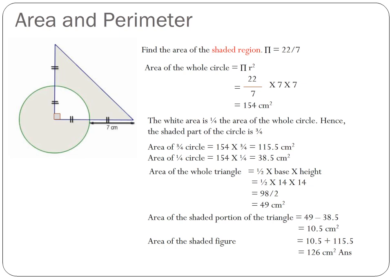Then now we turn our attention to the triangle. The area of the whole triangle is equal to half base times height. And this is equal to half times the base, which is 14 centimeters, multiply the height, which is 14 centimeters. It's 14 because it's 7 plus 7. And this is equal to 98 over 2 equals 49 square centimeters.